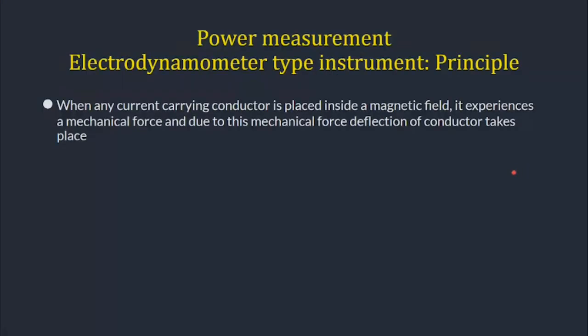First we will see power measurement using the electrodynamometer type instrument and its principle. When any current-carrying conductor is placed inside a magnetic field, it experiences a mechanical force, and due to this mechanical force, deflection of the conductor takes place. This mechanical force causes the deflection and that is used to indicate the power.